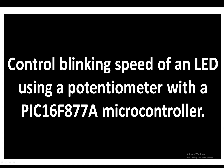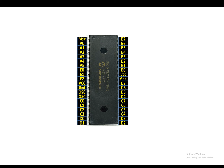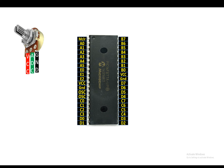Hello guys, welcome to Learning Microcontrollers. In this video I am going to show you how you can control the blinking speed of an LED using a potentiometer with a PIC16F877A microcontroller. This is our PIC16F877A microcontroller having 40 pins, it's a DIP package. This is the potentiometer - it has three pins: the rightmost is ground, the center one is the ADC output pin, and the left one is the VCC pin. You can shuffle the ground and VCC - it will only change the direction of rotation.